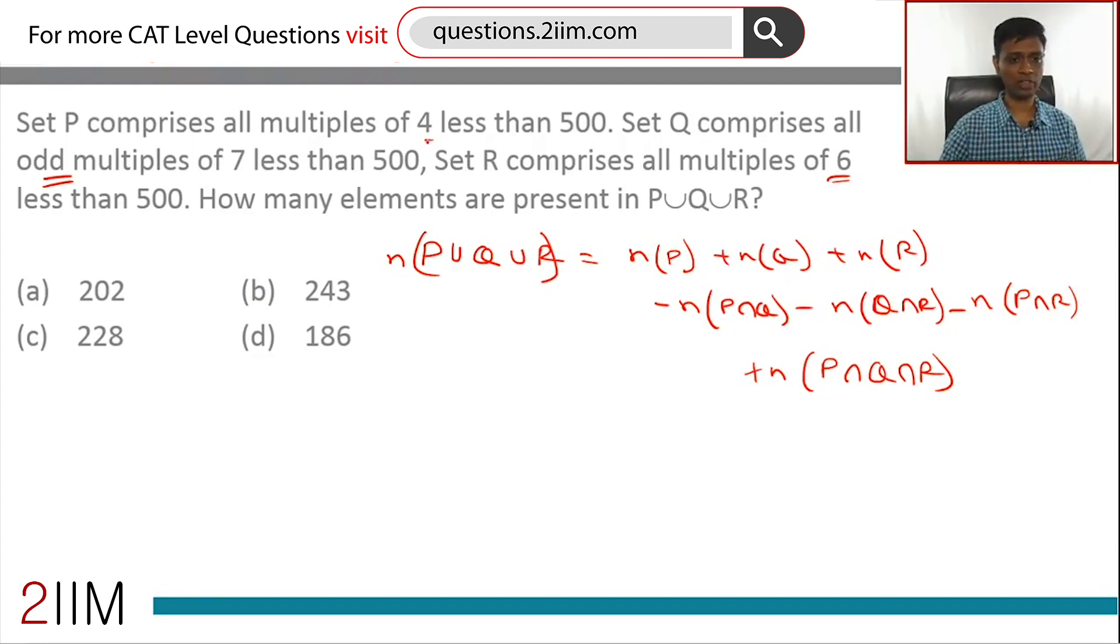First, set of all multiples of 4 less than 500. This is very simple. n(P): all multiples less than 500. 500 is 4 into 125, so less than 500, P has 124 numbers.